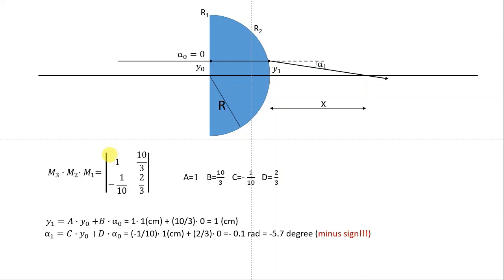From our matrix, the coefficients are: A = 1, B = 10/3, C = −1/10, and D = 2/3. The output height y1 = A·y0 + B·alpha0, which gives 1 centimeter, as expected since alpha0 = 0. For alpha1, using the C and D coefficients, we find the ray exits at −0.1 radians, corresponding to approximately −5.7 degrees.